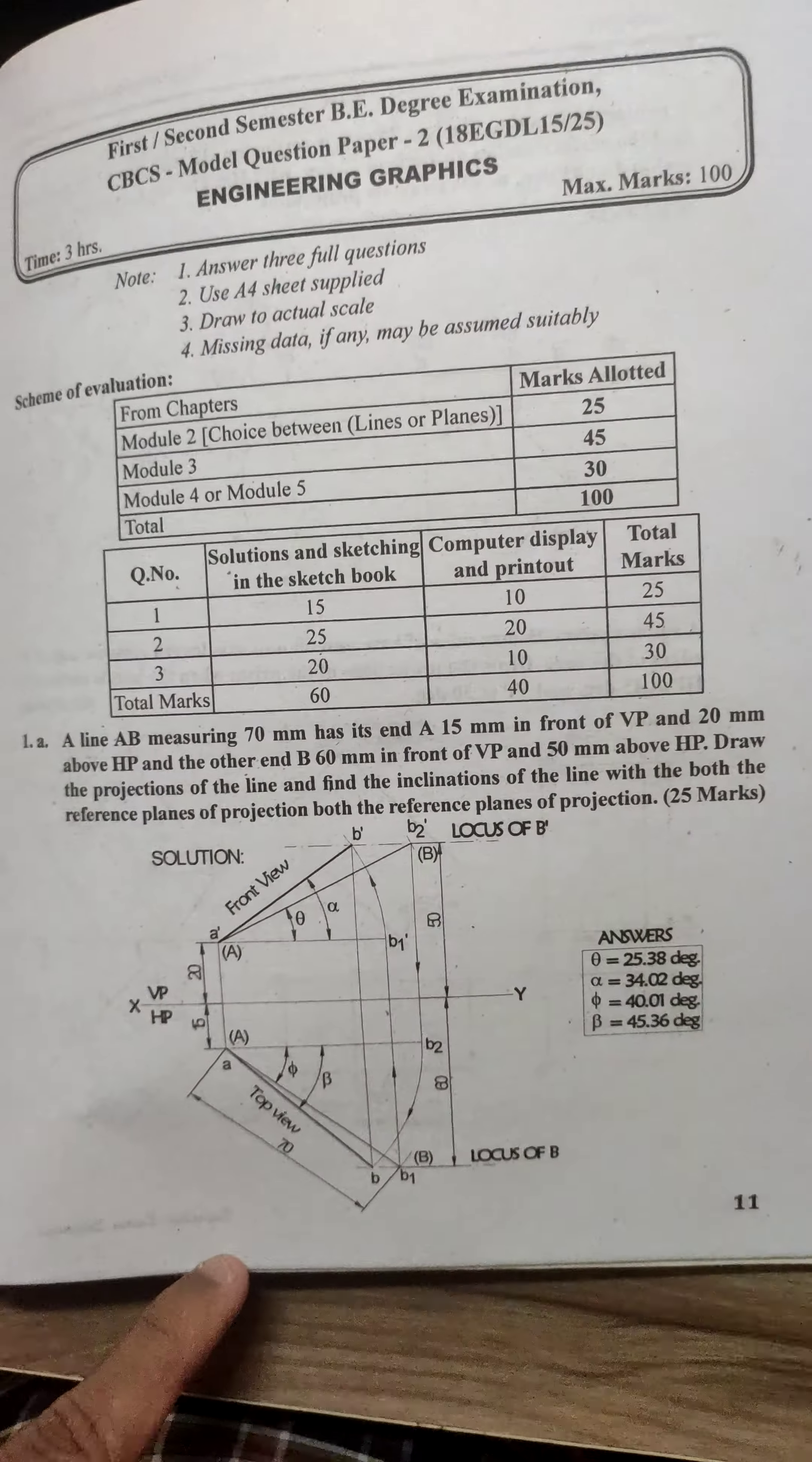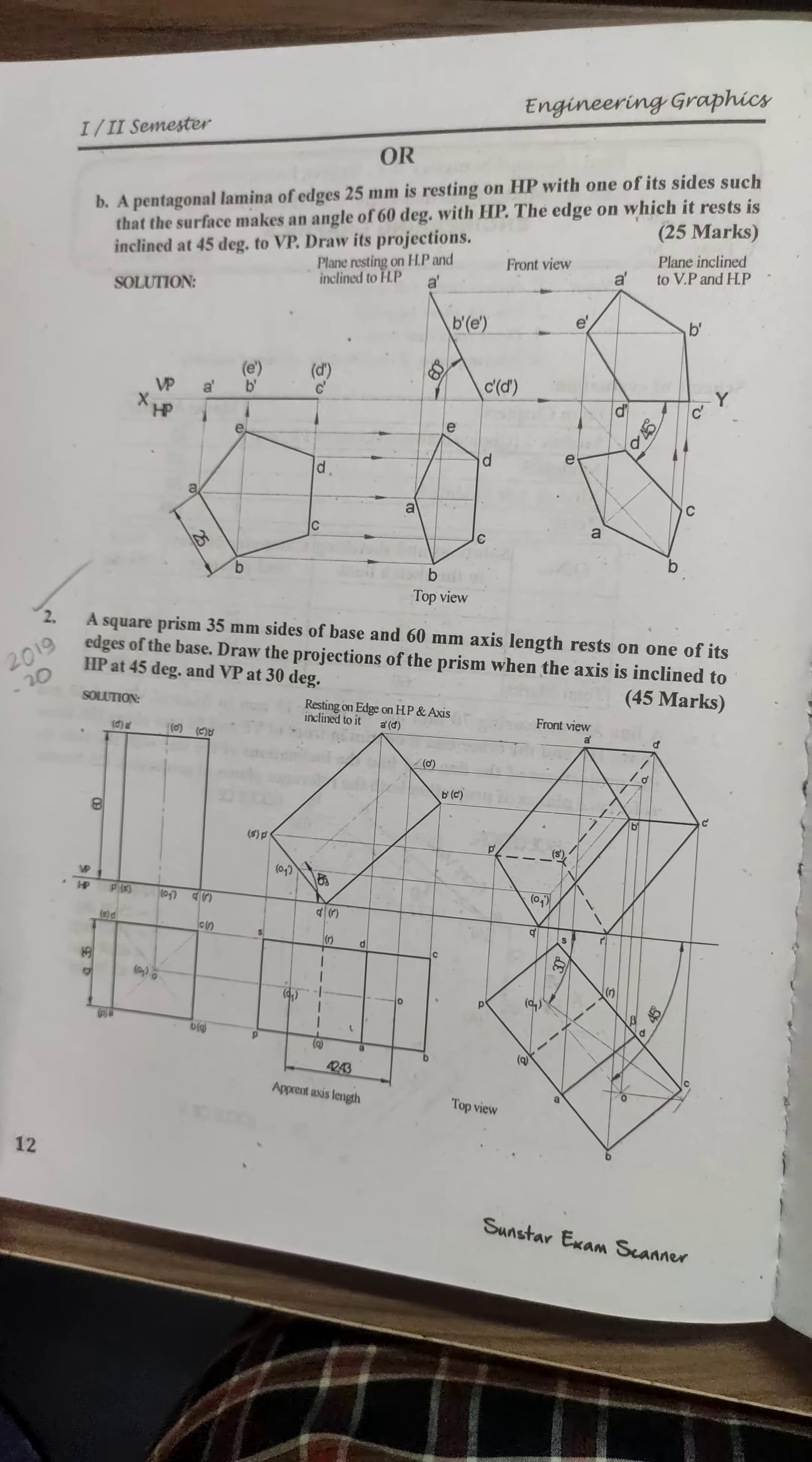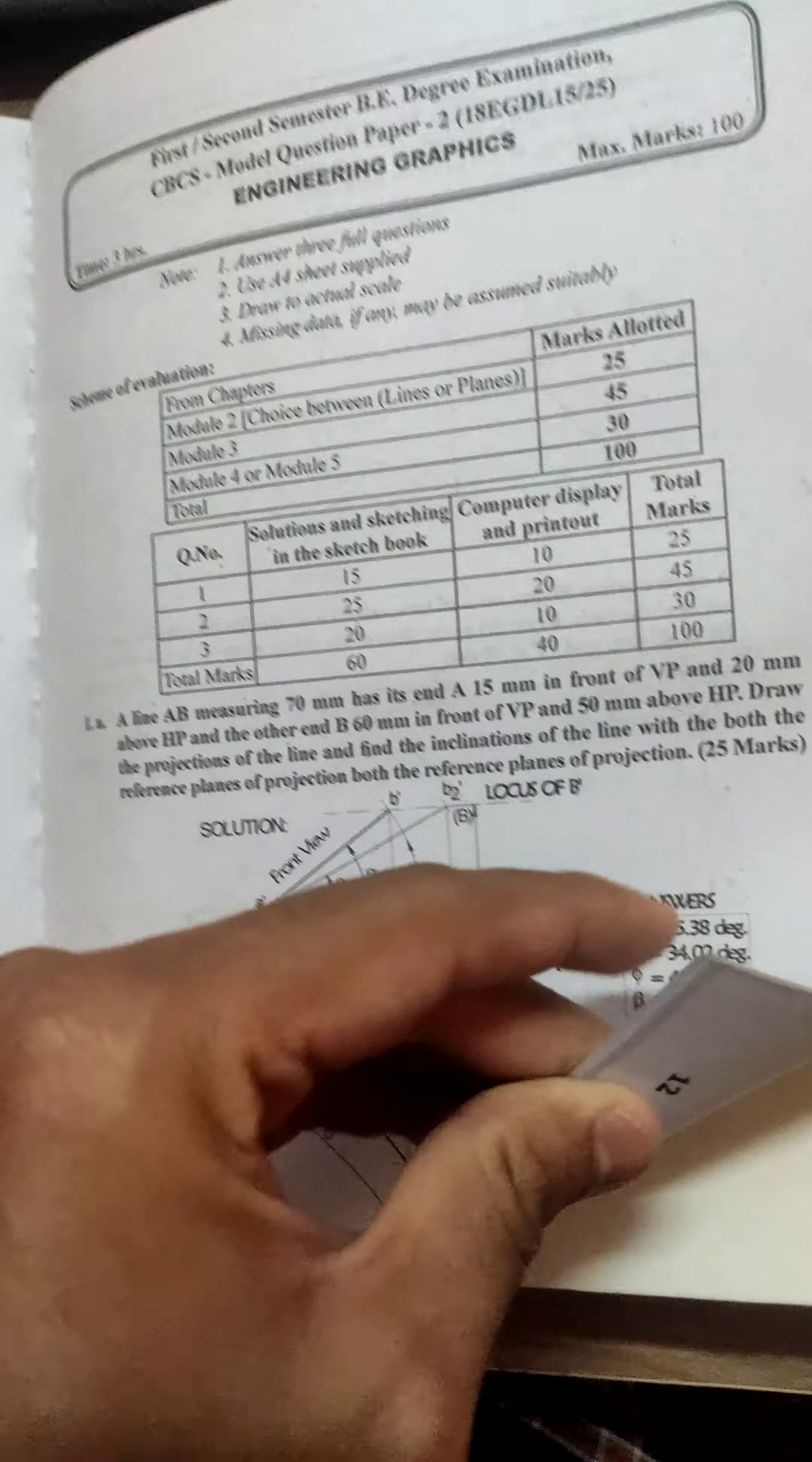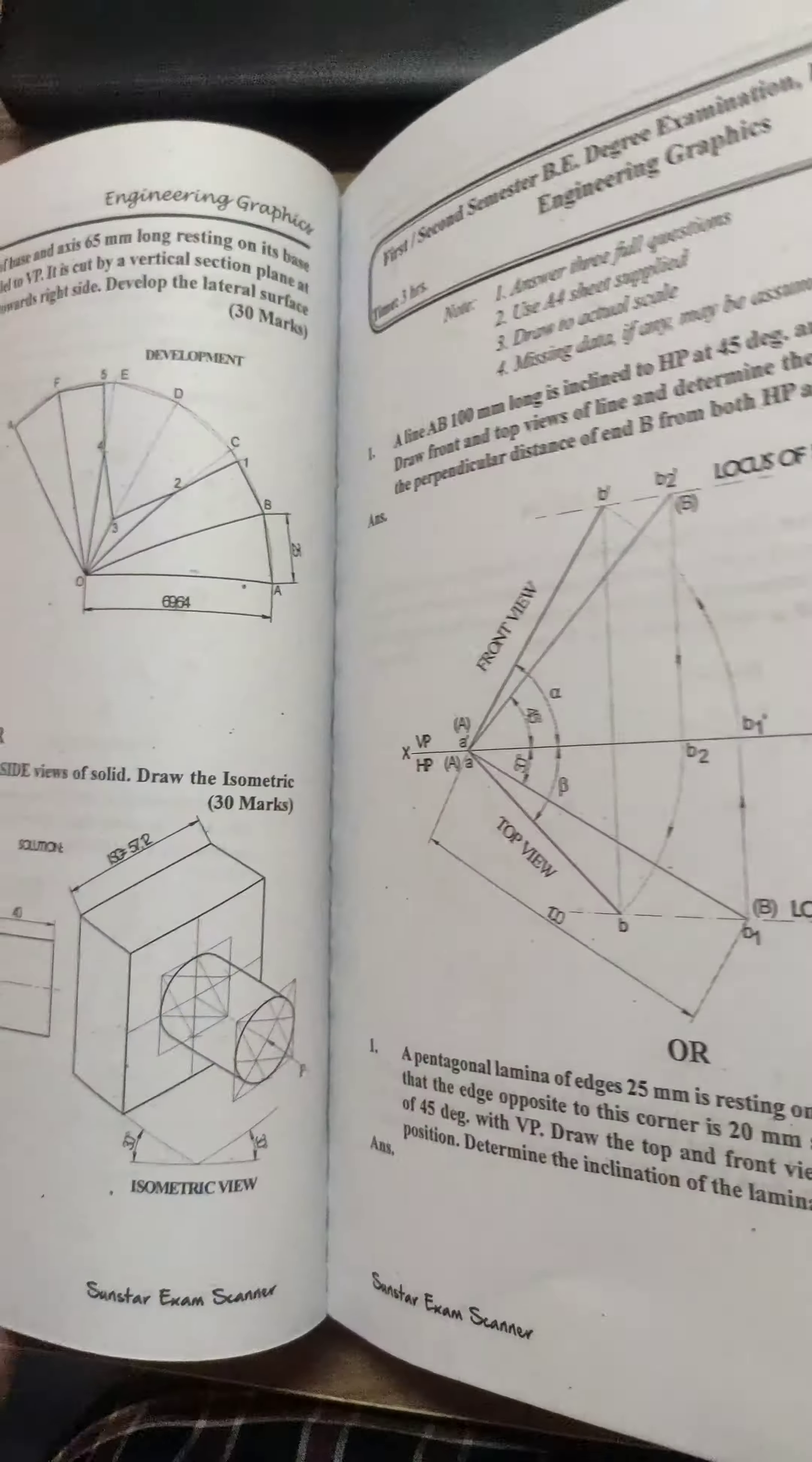Now let's look at engineering graphics. This is one model paper. This is usually set by the college, so the college people will decide. You can see the marks are allocated. There are two questions in every module - it can be 25 marks and 25 marks. The previous one you can see is 25 and 25. This previous one has come in some exam. So it's all model papers - you don't get the full solution.